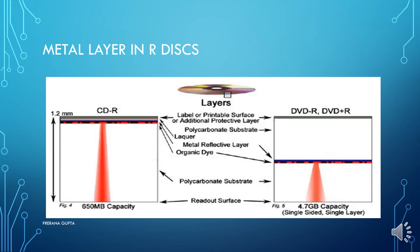For recordable discs, gold, silver, or silver alloy is used for the reflective layer. Silver is slightly more reflective than gold but can lose reflectivity through corrosion or exposure to adverse environmental conditions — silver corrodes through reaction with sulfur dioxide. Gold is non-corrosive, very stable and long-lasting, but expensive. Aluminum is not used with these discs because it can react with the organic dye in the recording data layer.